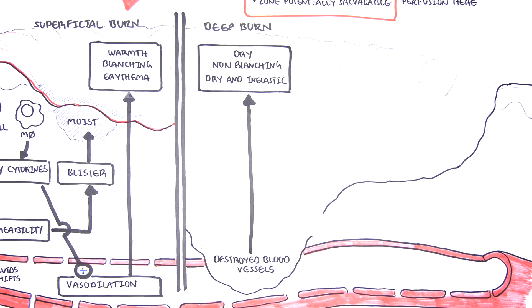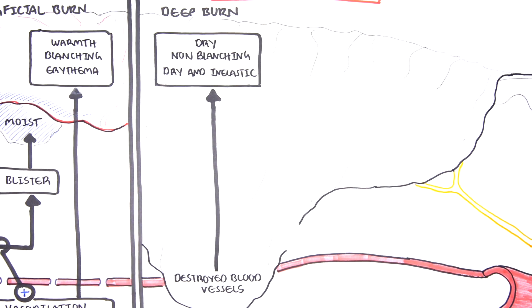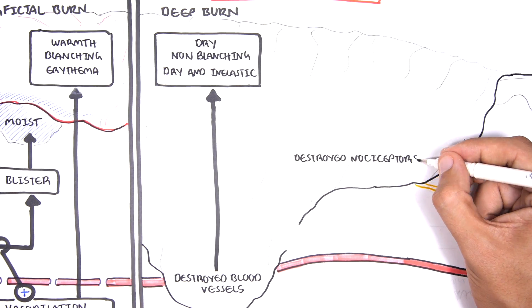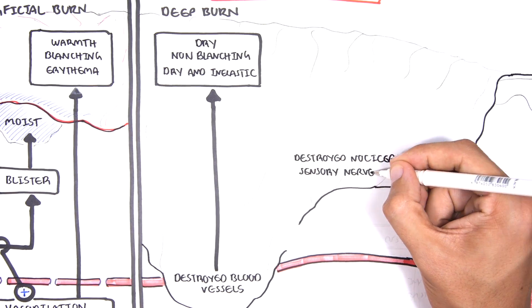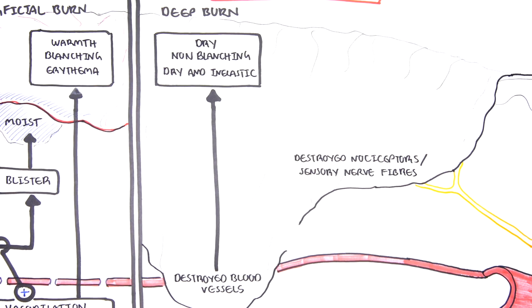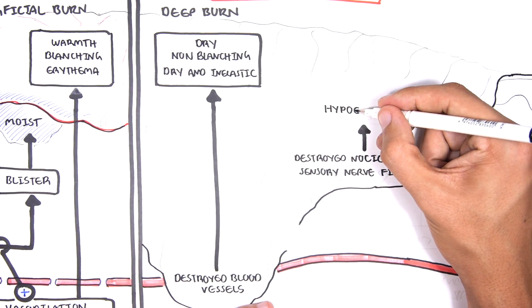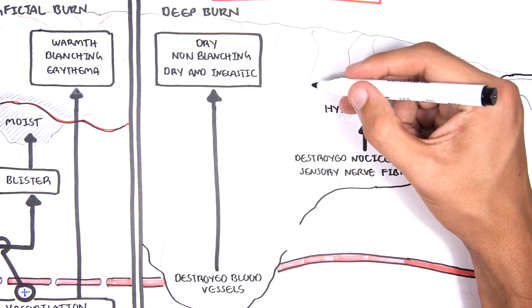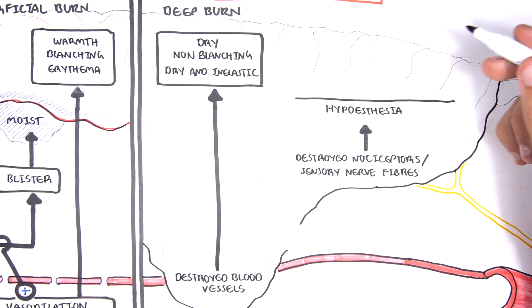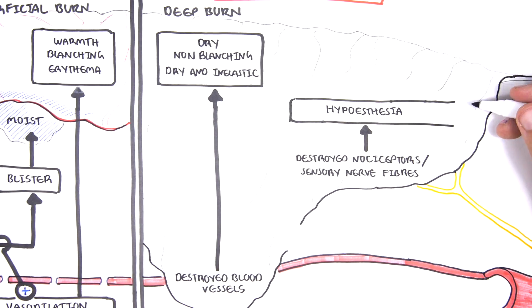Further, deep burns extending to the reticular layer of the dermis can destroy nociceptors and other sensory nerve fibers. Initially, pain can be detected, but as the sensory nerve fibers are damaged, you get hypothesia. So, you get reduction in sensation. Loss of sensation is an important feature of deep burns.